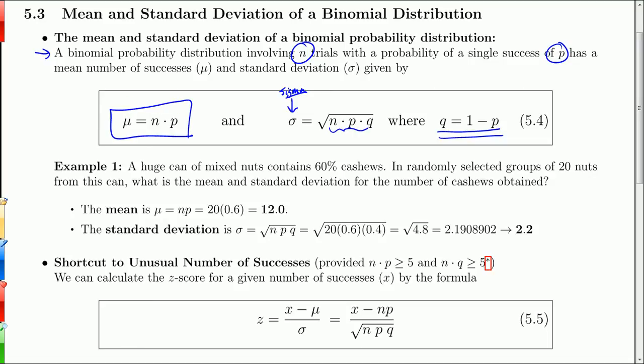Getting the mean is actually somewhat intuitive. This formula here for the mean should be fairly intuitive. Here's an example: You have a huge can of mixed nuts with 60% cashews. You randomly select groups of 20 nuts. What is the mean for the number of cashews obtained? Well, you would expect, on average, you would get 12 cashews, right? 60% of 20. And that's all it is. It's just 20, n, times p, which is 0.6, or 12. So the mean should make total sense.